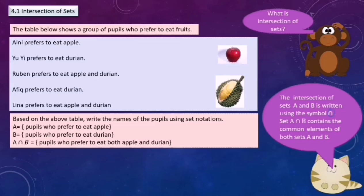To know further, let us look at the version beside here. The table below shows a group of pupils who prefer to eat fruits. Aini prefers to eat apple. Yui prefers to eat durian. Ruben prefers to eat apple and durian. Afik prefers to eat durian. Dina prefers to eat apple and durian. Based on the above table, write the names of the pupils using set notations.